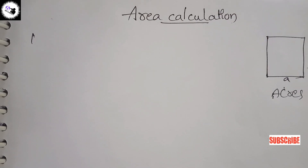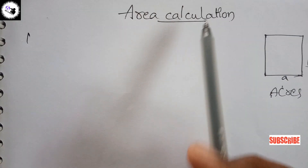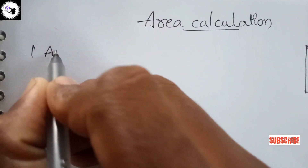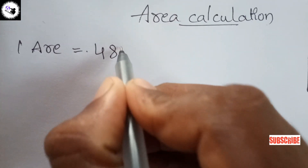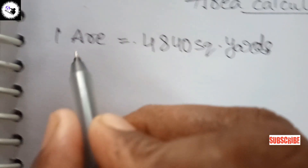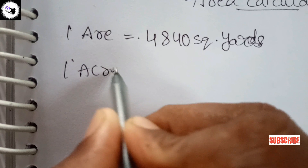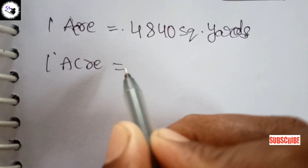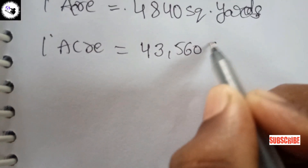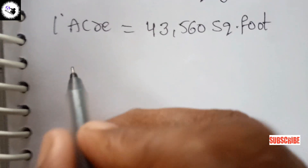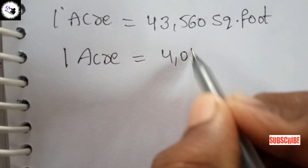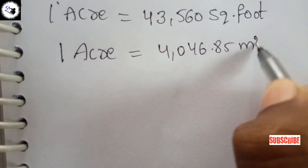Hi everyone, welcome to Civil Tech Constructions. In this video you will learn about area calculation. One acre is equal to 4840 square yards. One acre is equal to 43,560 square feet. And one acre is equal to 4046.85 square meters.